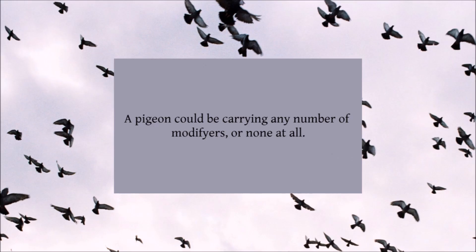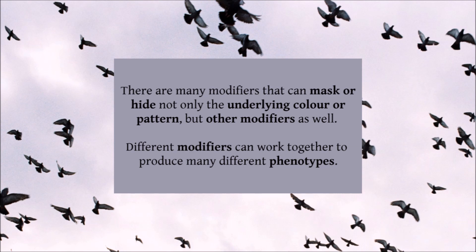Now that we've spoken about two of our three categories of genes, let's talk about modifiers. A modifier is really any other gene that changes the appearance of the pigeon's feather colour — traits like grizzle, almond, or spread as already discussed. Unlike the previous two categories, a pigeon could be carrying any number of modifiers, or none at all. Modifier genes are found at hundreds of different loci on any number of chromosomes, which means things can become a lot more complicated. There are many modifiers that can mask or hide not only the underlying colour or pattern, but other modifiers as well.